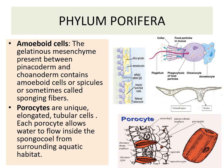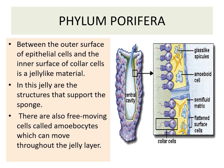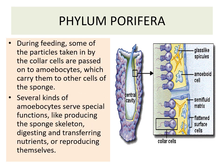Porocytes are unique elongated tubular cells. Each porocyte allows water to flow inside the spongocoel from the surrounding aquatic habitat. Between the outer surface of the epithelial cell and the inner surface of the collar cell is a jelly-like material that supports the sponge. There are also free-moving cells — the amoebocytes — which are present throughout the mesenchyme. During feeding, some of the particles taken in by the collar cells are passed to the amoebocytes, which carry them to other cells of the sponge.